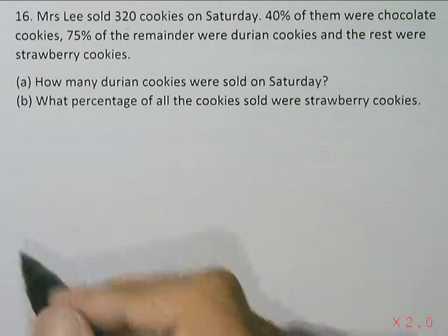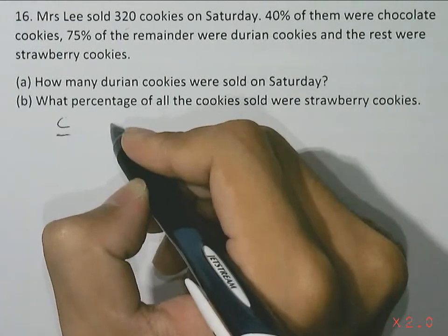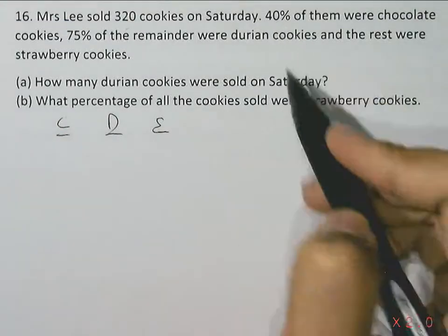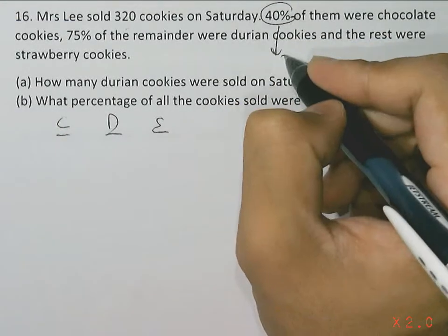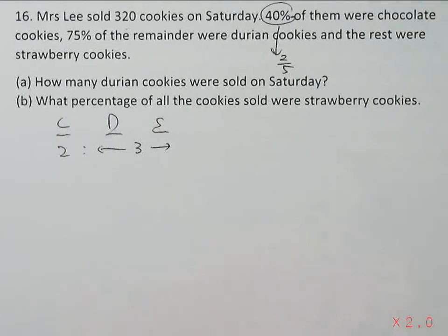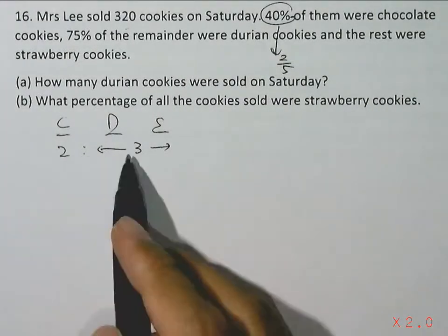So if you consider the ratio of the chocolate cookies to the durian to the strawberry, we know that 40% were chocolate. So 40% is equivalent to two-fifths. So two-fifths were chocolate, the remaining three-fifths would be durian and strawberries. So the ratio is 2 to 3.